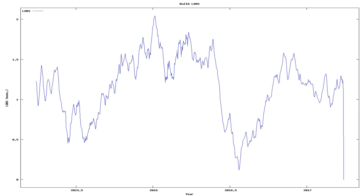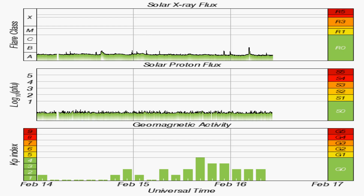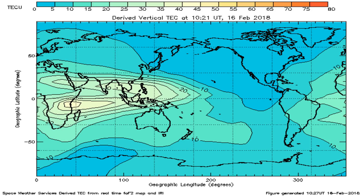And now we see changes in the speed of the rotation of the Earth, along with solar x-ray flux, solar proton flux, geomagnetic disturbances, and another graph of total electron content across the Earth.